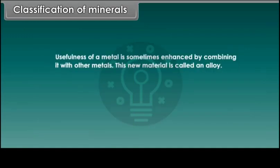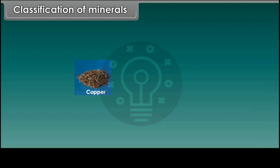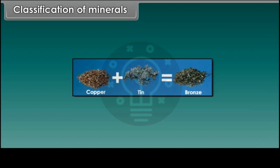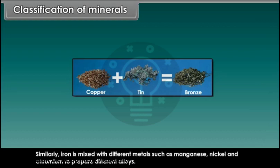The usefulness of a metal is sometimes enhanced by combining it with other metals. This new material is called an alloy. Copper is made stronger by adding tin, and this alloy is called bronze. Similarly, iron is mixed with different metals such as manganese, nickel and chromium to prepare different alloys.